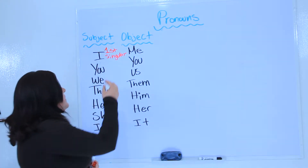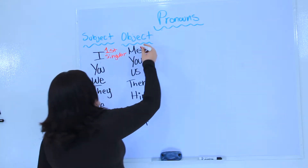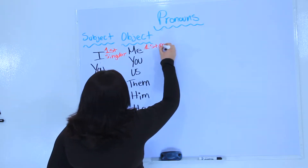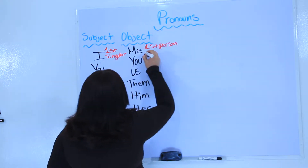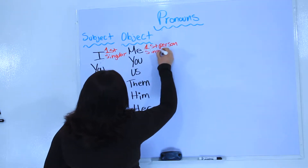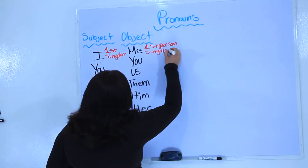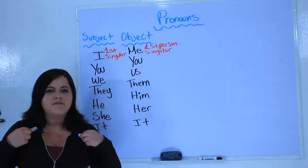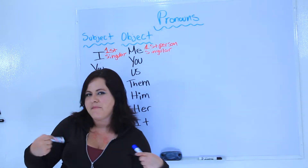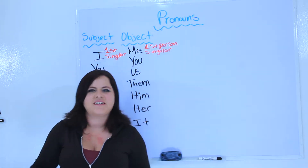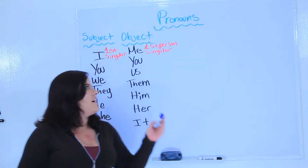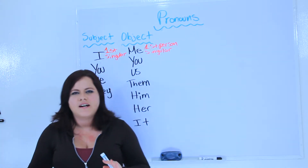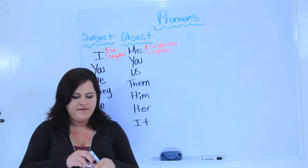And then the object pronoun is me. So this is first person singular. For example, I am Fabi. Do you like me? I and me are first person singular pronouns.